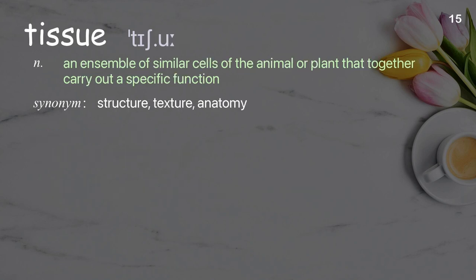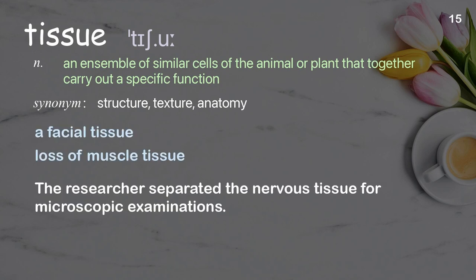Tissue: an ensemble of similar cells of the animal or plant that together carry out a specific function. Examples: a facial tissue, loss of muscle tissue. The researcher separated the nervous tissue for microscopic examinations.